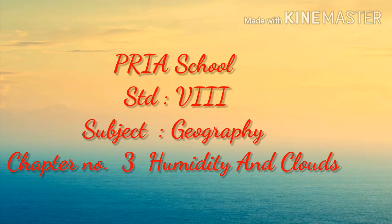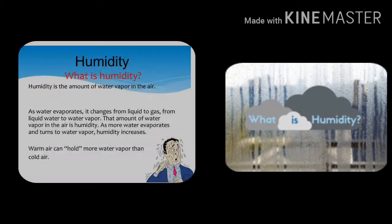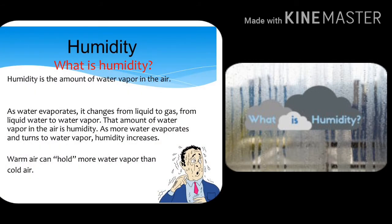Before we start, let us recapitulate what is humidity. Humidity is the amount of water vapor in the air. As water evaporates, it changes from liquid to gas — from liquid water to water vapor. That amount of water vapor in the air is humidity. As more water evaporates and turns to water vapor, humidity increases. Warm air can hold more water vapor than cold air.